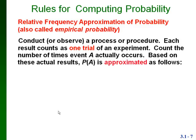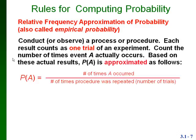There are two kinds of approaches to computing probabilities. The first is called a relative frequency approximation, also known as empirical probability or experimental probability. This comes from actually conducting or observing a process — each result counts as one trial. The probability of event A is the number of times A occurred divided by the number of times the procedure was repeated, i.e., the total number of trials.